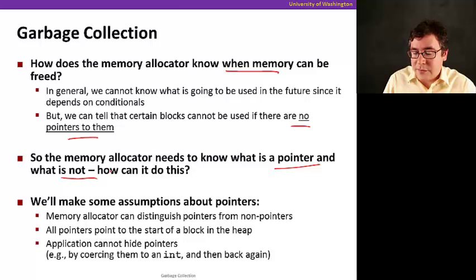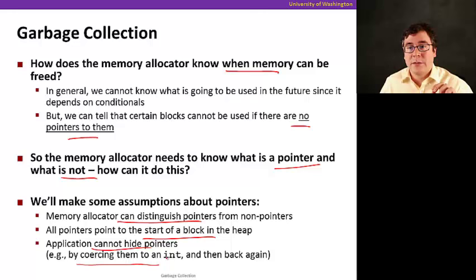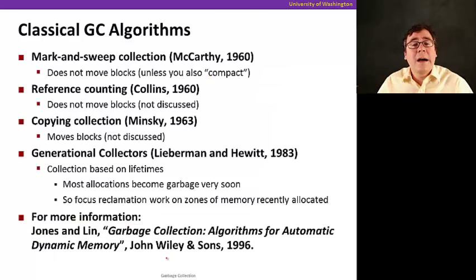So we're going to make some assumptions about pointers in the rest of this video. First, memory allocator can distinguish pointers from non-pointers. So all pointers point to the start of a block in the heap, and the application cannot hide pointers. For example, it cannot cast them into ints and then back again to hide pointers. So that's what I mentioned before, disciplined use of pointers.